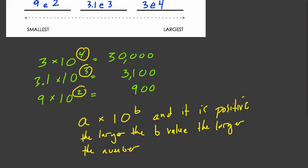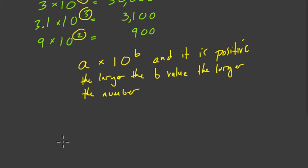Now, of course, if you have two numbers with the same exponent, let's just say you have 3.1 times 10 to the 4th versus 3 times 10 to the 4th. So in this scenario, 3.1 is larger.